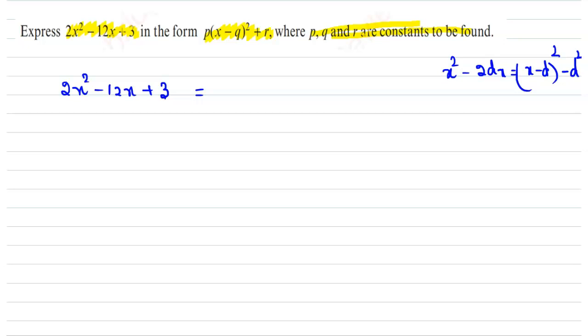Consider 2x² - 12x + 3 written as p(x - q)² + r. Expand this: p(x² - 2qx + q²) + r, which equals px² - 2pqx + pq² + r.